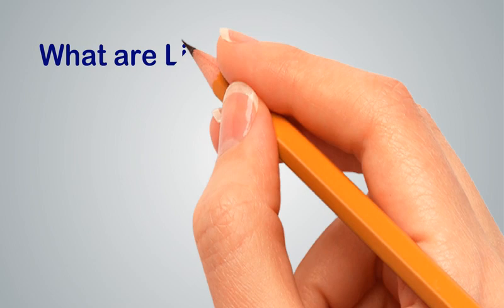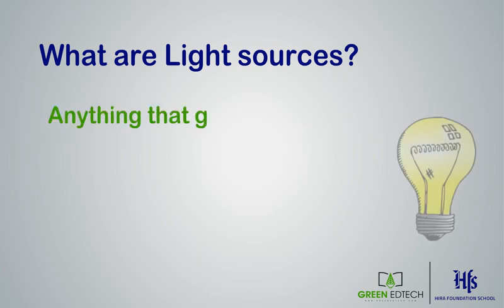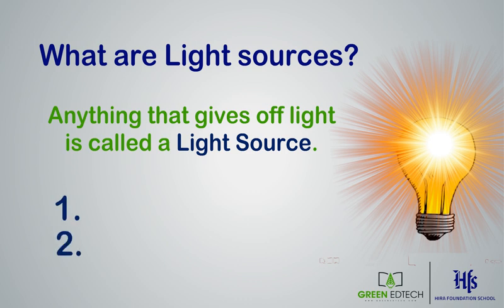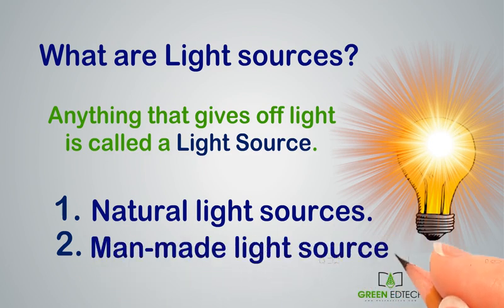What are light sources? Anything that gives off light is called a light source. There are two types of light sources: natural light sources and man-made light sources.